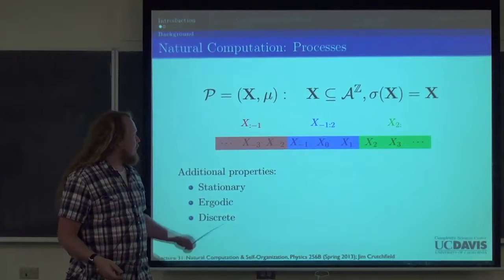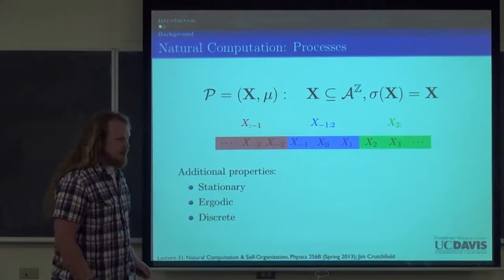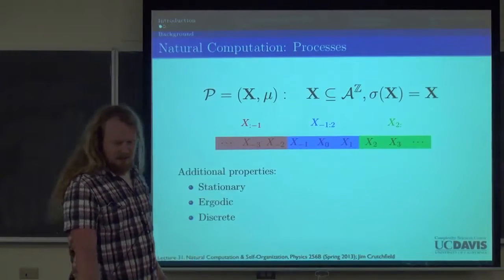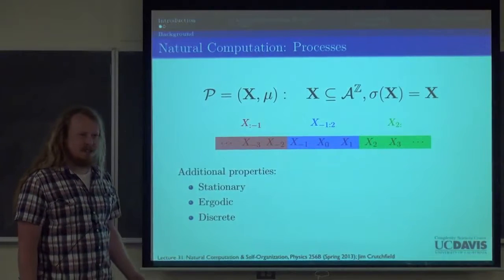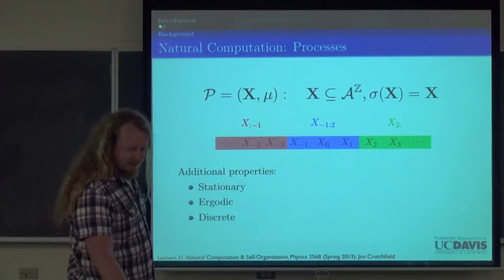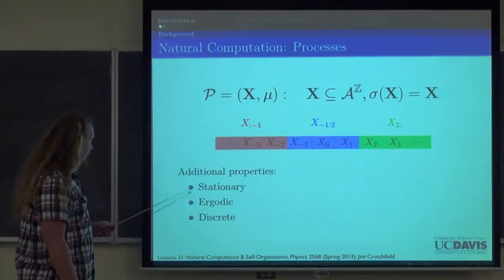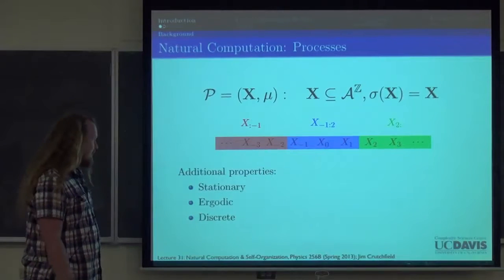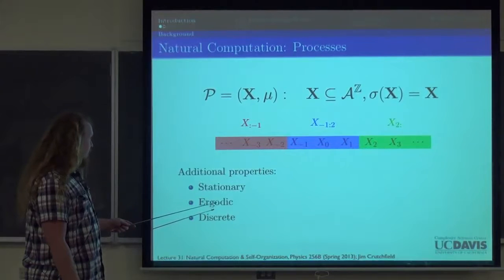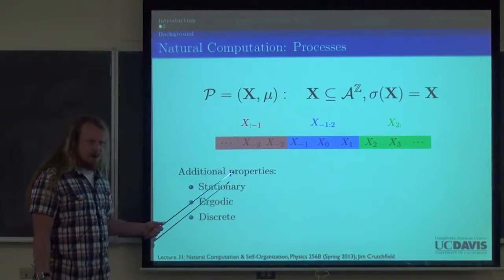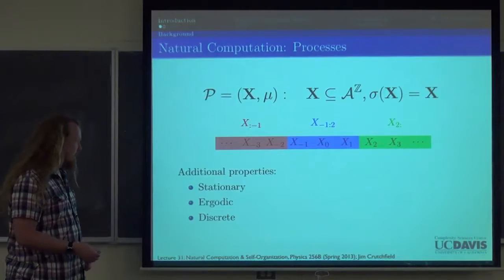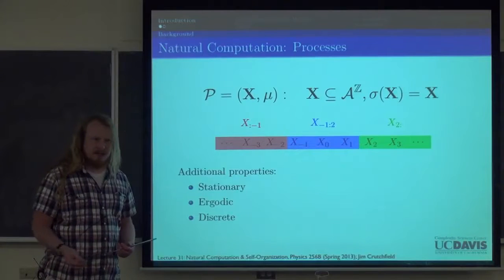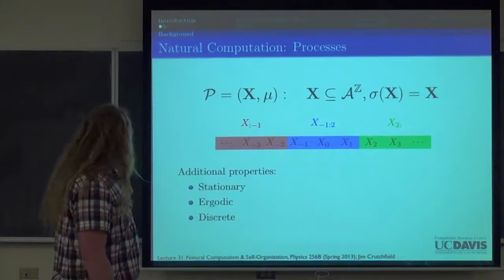Mu stands for a measure — just standard measure theory. For the duration of this talk, we will assume that the processes we look at are stationary, ergodic, and discrete — discrete in both time and observed symbols. The notion of Markov and cryptic orders doesn't quite hold in non-ergodic cases, but the algorithms we talk about will calculate a generalization of those properties in non-ergodic situations. Stationarity is needed, but the ergodic assumption can be relaxed somewhat and the algorithms will still work.